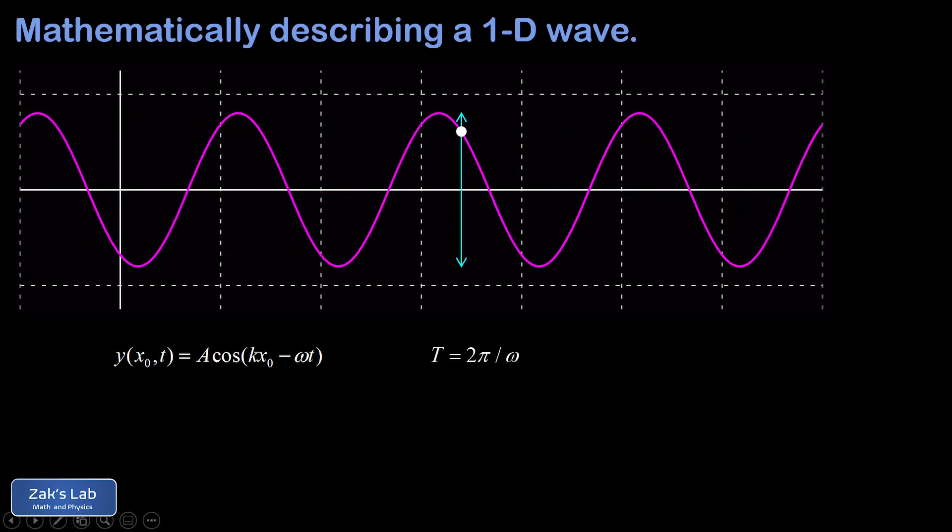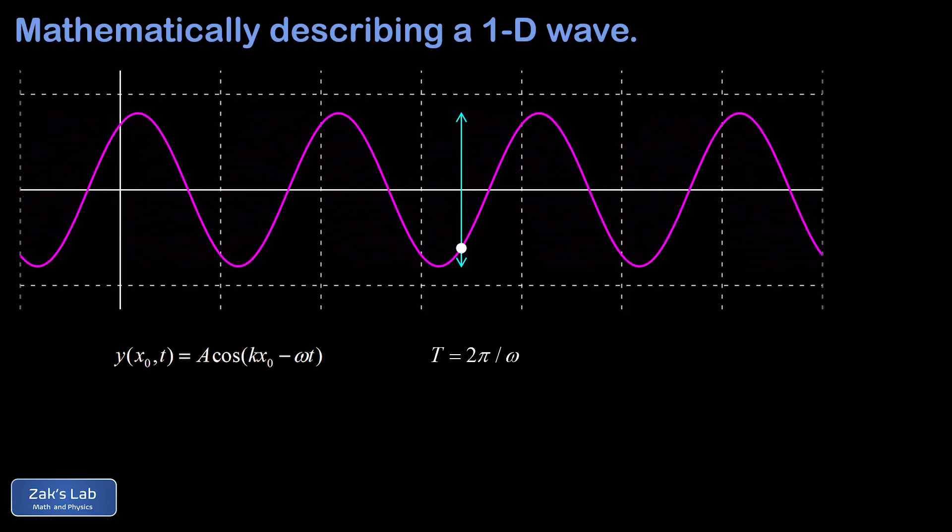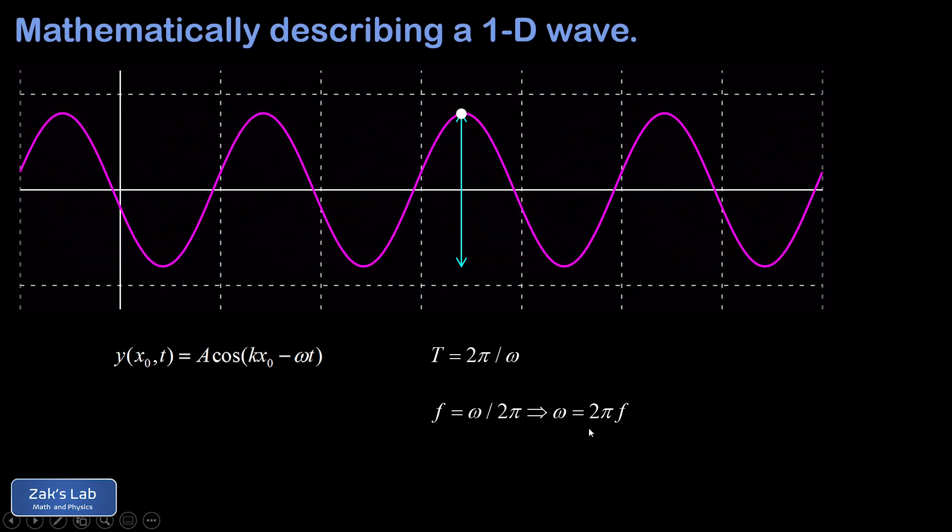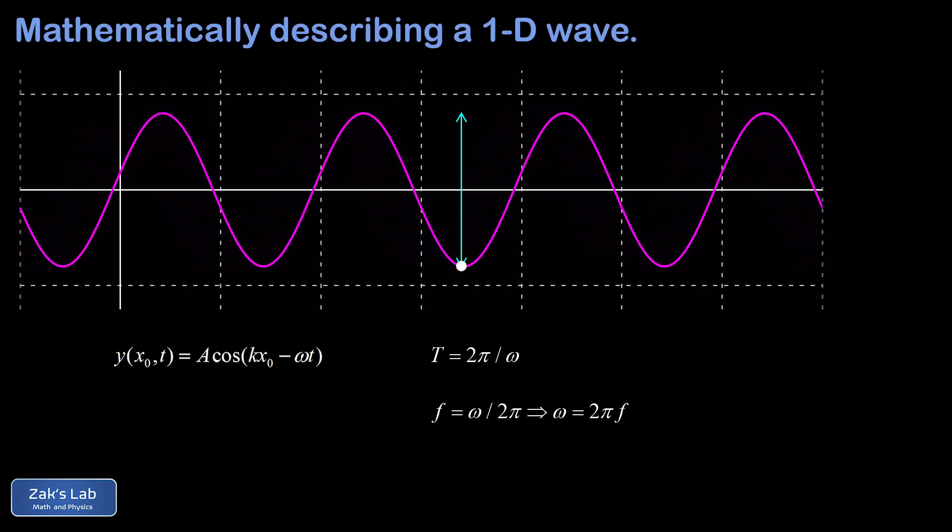Recalling that the frequency of the oscillation is the reciprocal of the period, we can write down the frequency as well. So the frequency is omega divided by 2π. Or we could turn that around and write that omega is equal to 2π times the frequency, depending on the sort of problem we're trying to solve.